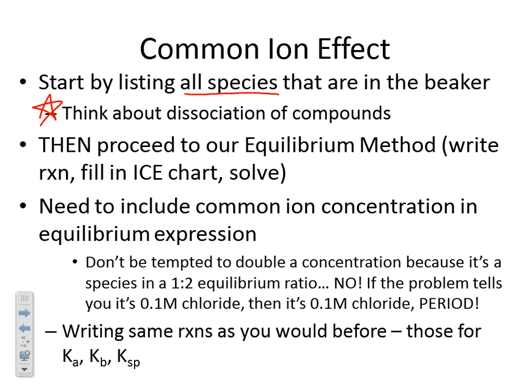The difference with this type of problem compared to previous equilibrium problems is not a huge difference at all. You need to include your common ion concentration in the equilibrium expression. If it tells you that we're starting with, like in that problem, 0.1 molar ammonium ion, then you would not put in zero for the ammonium ion concentration — because you know you have 0.1 molar of it.